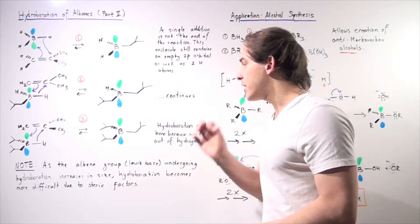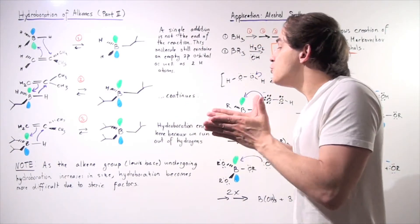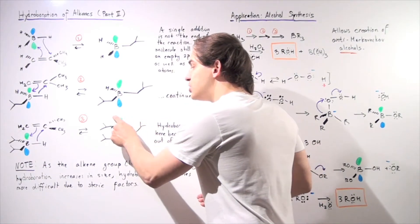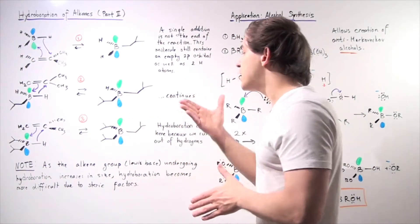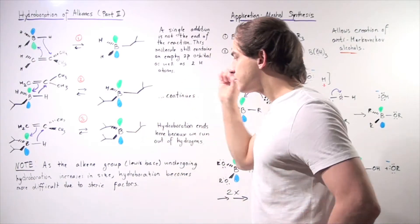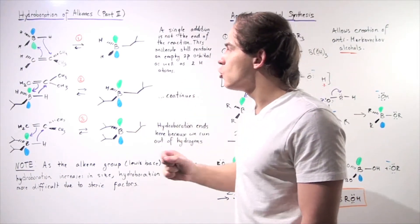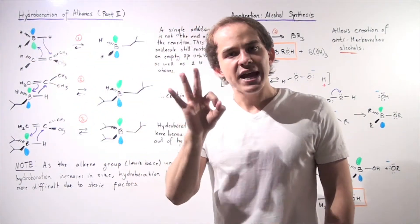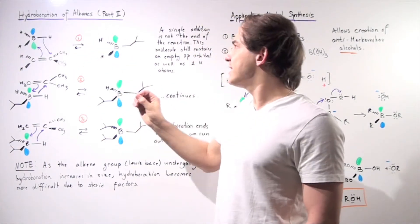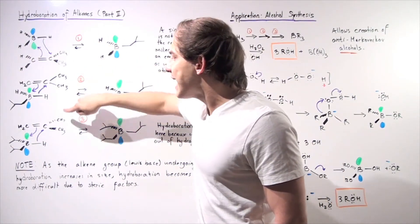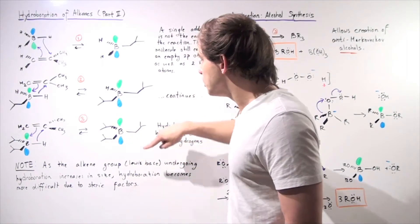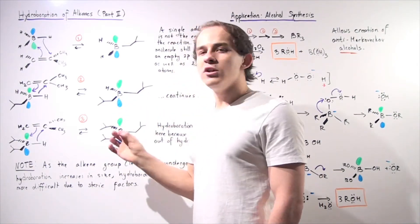This is the end of hydroboration. We know because we have no more H atoms left over. We still have the Lewis acid — the empty 2p orbital — but we no longer have those H atoms. So, since we began with BH3 and three H atoms, there are three possible hydroboration reactions. If we use the same alkene every time, we produce a symmetrical molecule in which every alkyl group attached to boron is identical.